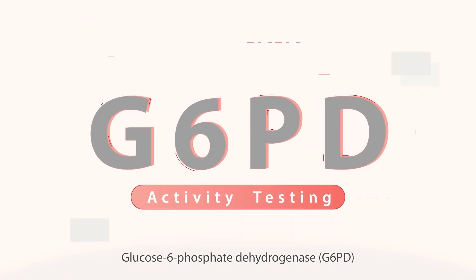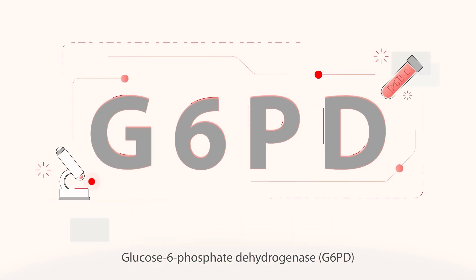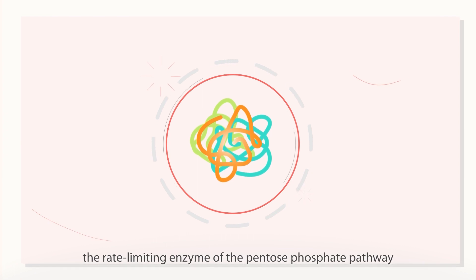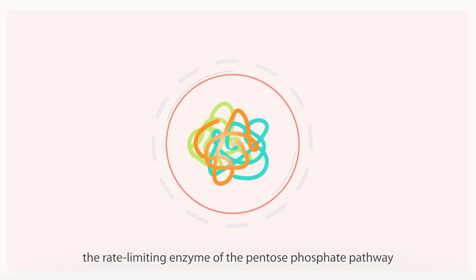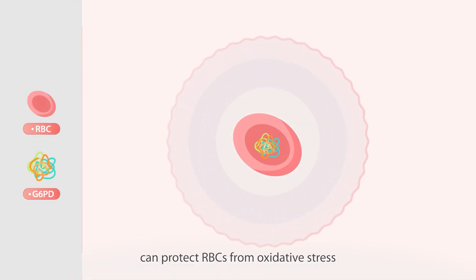Glucose-6-phosphate dehydrogenase, G6PD — the rate-limiting enzyme of the pentose phosphate pathway — can protect red blood cells from oxidative stress.